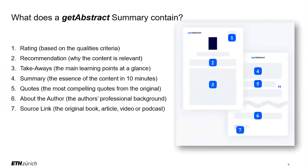Now, the second part: the structure of a Get Abstract summary. We have a rating, which is a number from 1 to 10 based on quality criteria such as hot topic, suitable for beginners, or innovative. Then we have a recommendation, then takeaways, then the summary itself, along with quotes and some brief information about the author and the source link.